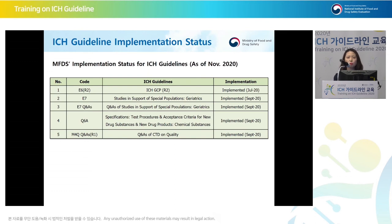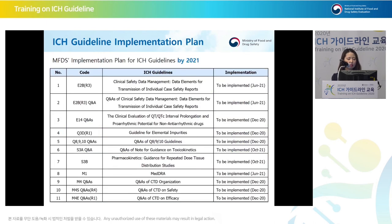In order to implement the guidelines, MFDS is making continuous efforts. Five guidelines have been recently fully implemented. For not yet implemented guidelines, we have plans to complete implementation by 2021 — there are 11 such guidelines.